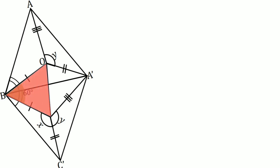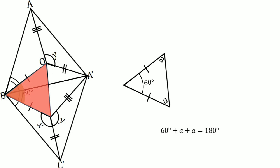Now considering this isosceles triangle, we know that angles opposite to the equal sides of a triangle are equal. So if we let our remaining angle be 'a', then another angle is also equal to 'a'. So 60 degrees plus a plus a equals 180 degrees, giving a equals 60 degrees. This means the isosceles triangle is actually an equilateral triangle, so our third side is also equal to the other two sides.